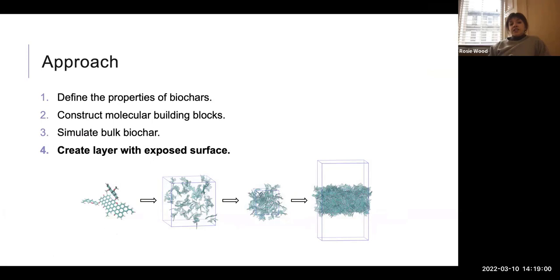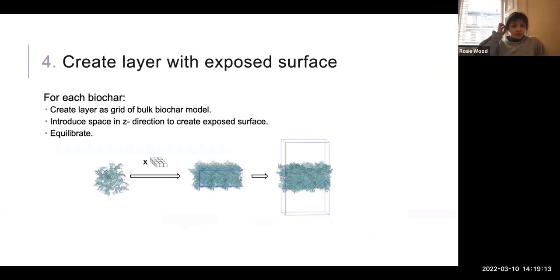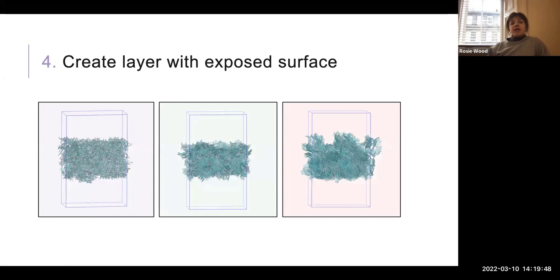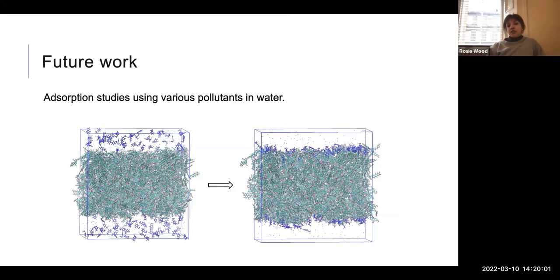The final thing I did was create a layer with an exposed surface so that I could study adsorption and interfacial properties of my biochars. I took one block of my bulk biochar and created a grid as a kind of layer, then introduced a space into my simulation cell in the Z direction — creating a space at the top and bottom so that I had a surface. I then ran a short simulation just to equilibrate my newly created surface atoms so they could find new favorable positions. Here are my three surfaces, which again have chemical and physical properties aligned to those I've outlined earlier.